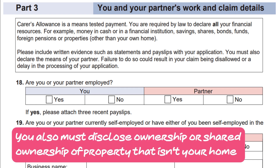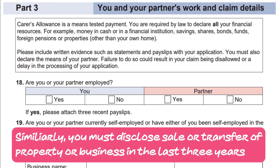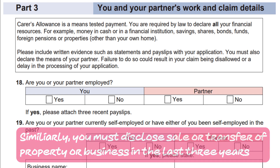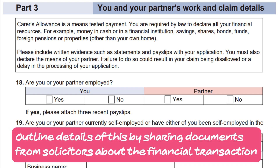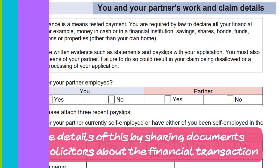You must also disclose ownership or shared ownership of property that isn't your home. Similarly, you must disclose any sale or transfer of property or business in the last three years. Outline details of this by sharing documents from solicitors about the financial transaction.